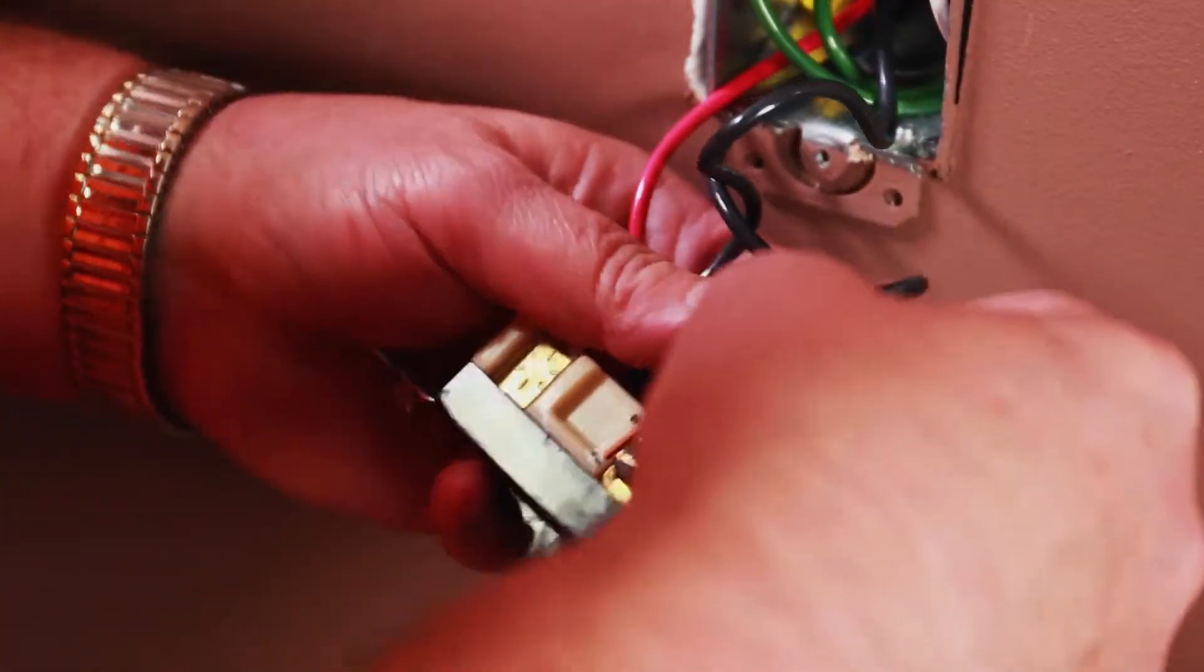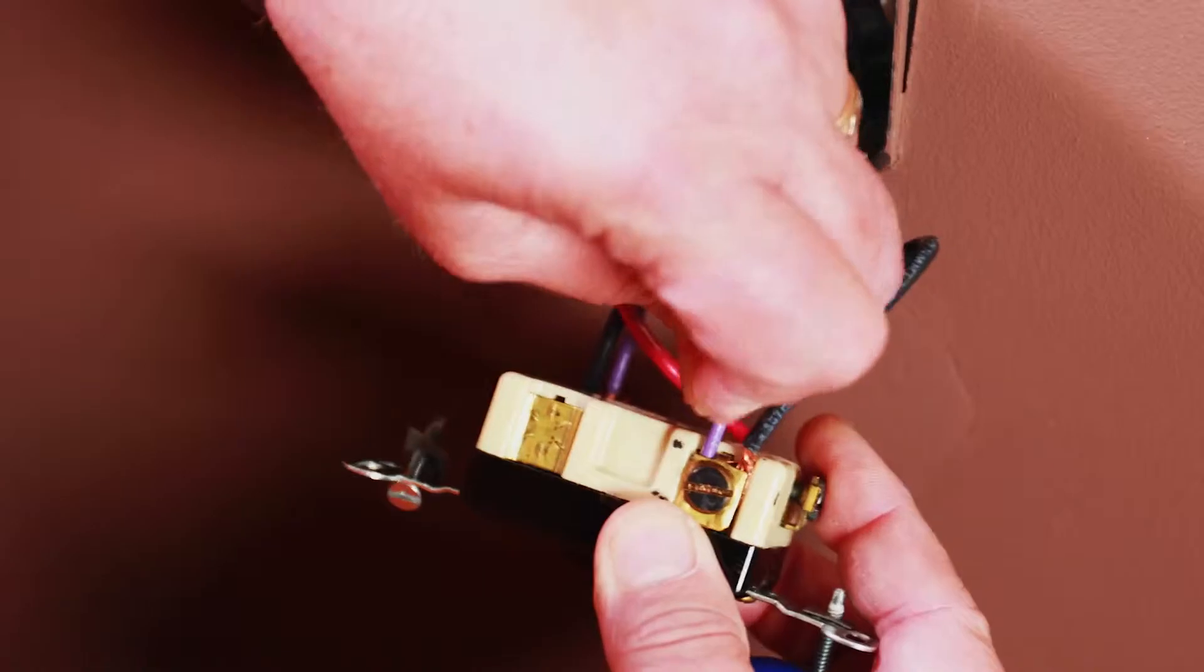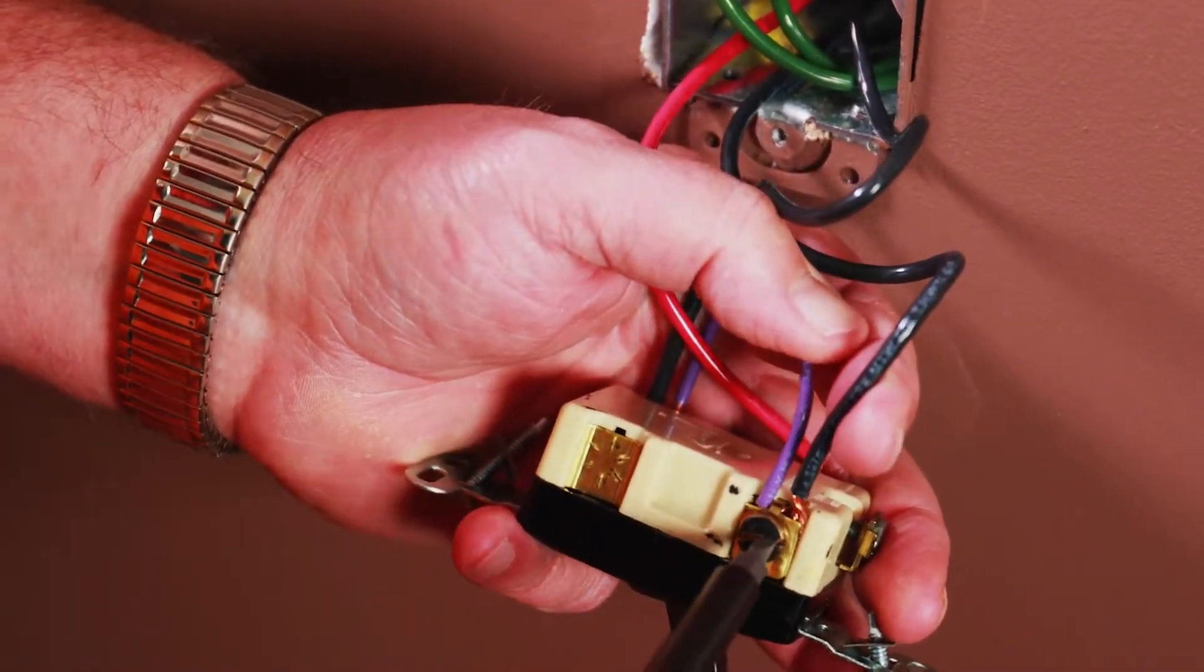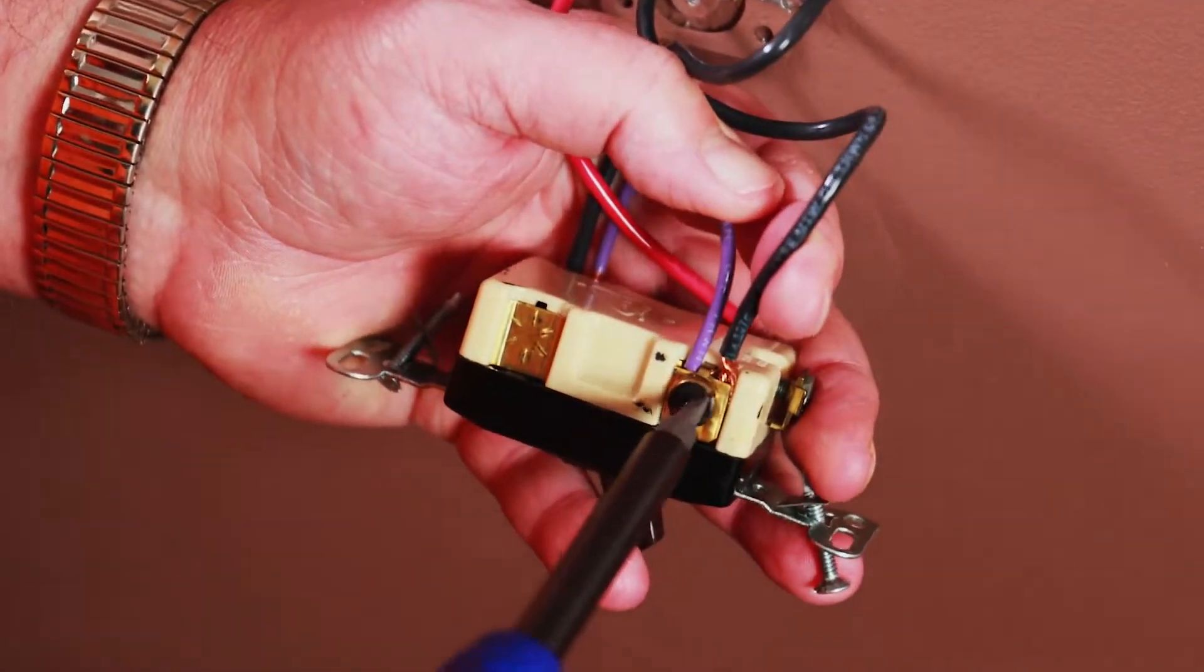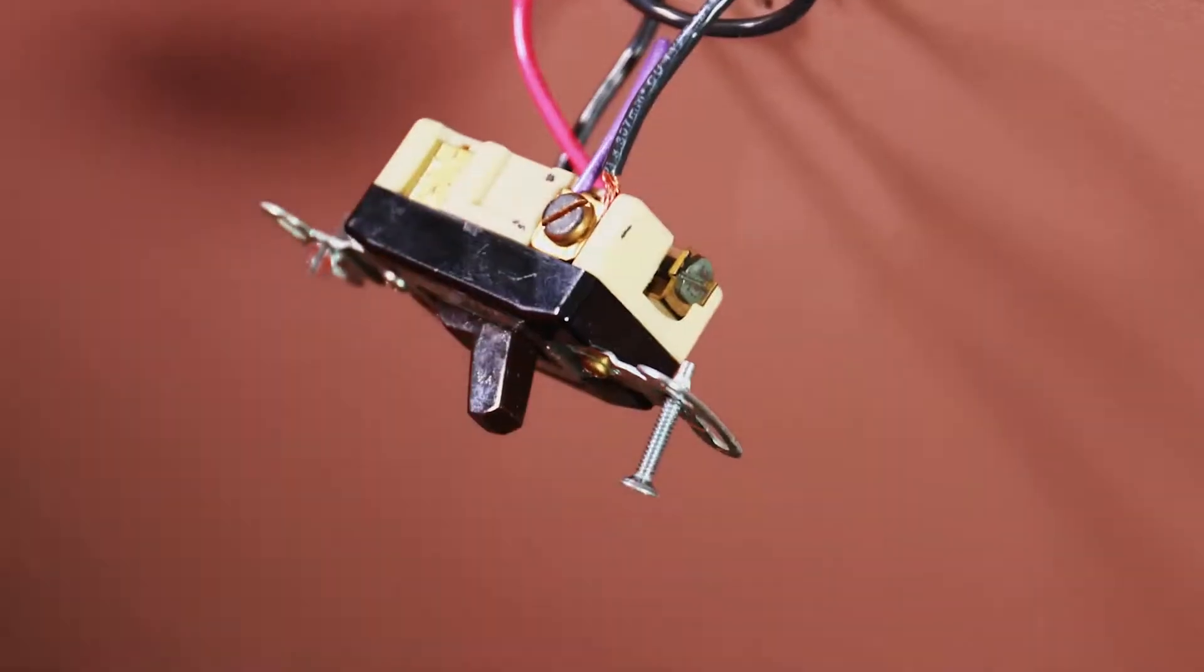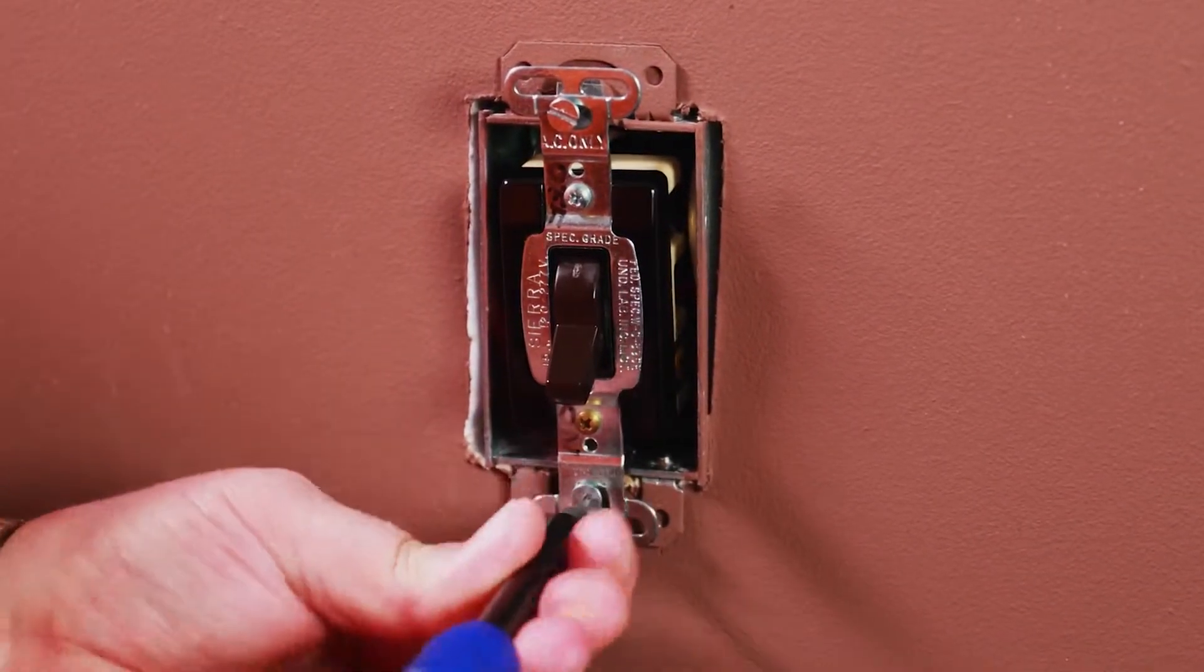Next, locate either one of the traveler wires connected to the existing switch. Place the other end of the jumper to that connection. Remember which traveler you are connecting to. Later on, the other end of this traveler will be attached to the black wire on the Ascend timer. Once in place, you can reinstall the line switch.